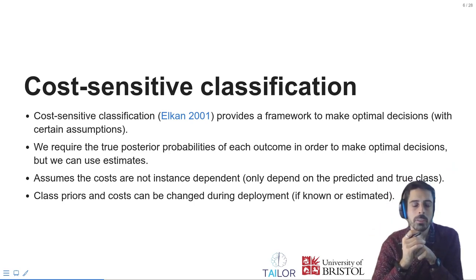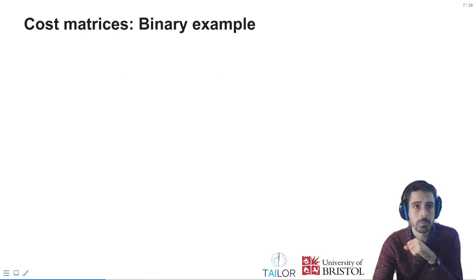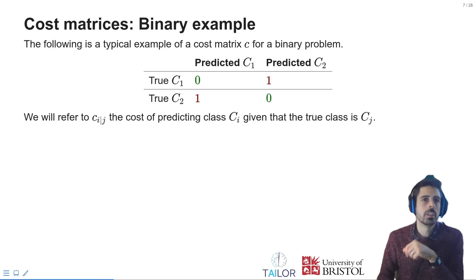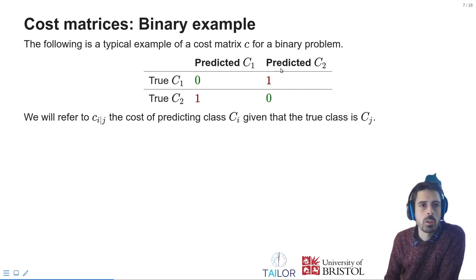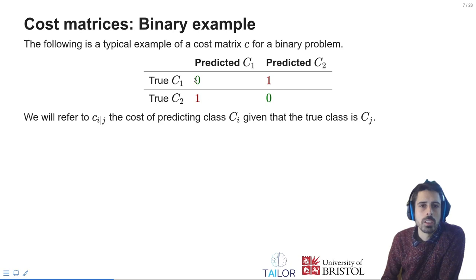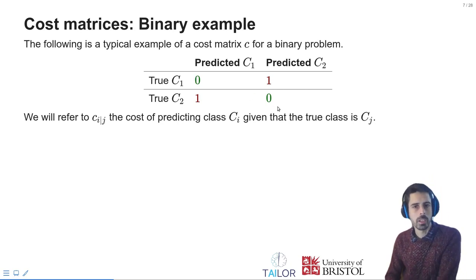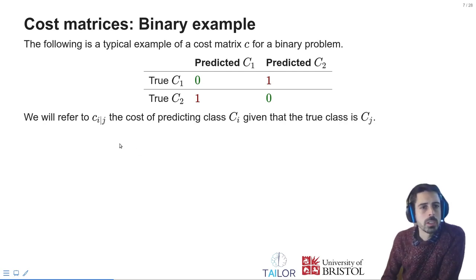Let's start with what cost matrices are. We will look at a binary example. A cost matrix encodes what the cost is of making each of the predictions given the true class. One of the most common cost matrices is: if we predict class 2 and the true class is class 1, we incur a cost of 1, and the same if we predict class 1 and the true class is class 2. We have no cost if we make a correct prediction. We will use the nomenclature c_y given j, denoting the cost of predicting class y given that the true class is j.